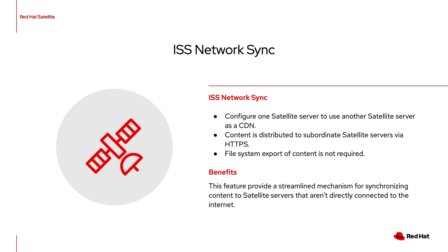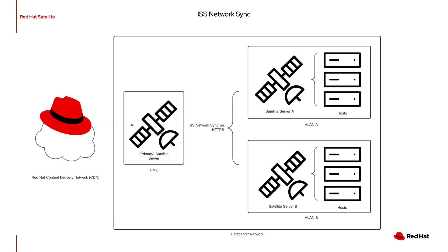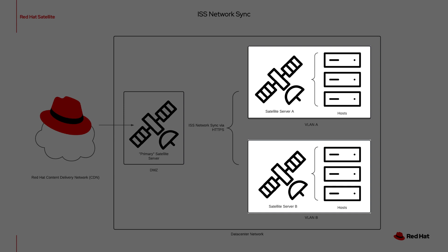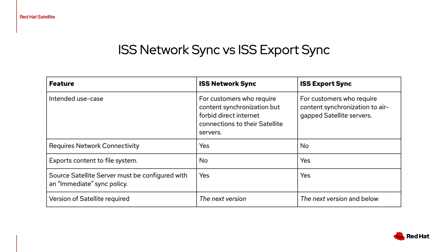The function of ISS network sync is pretty simple — you just configure your subordinate Satellite servers to use another Satellite as a content delivery network provider. Here's a diagram of how this works: data is synchronized directly to the primary Satellite server, and the secondary Satellite servers in VLAN A and B then synchronize their content from it. ISS was available in previous versions of Satellite, but ISS network sync still requires network connectivity. We now refer to the other ISS sync as ISS export sync, because content is exported to the file system before being transferred to a secondary Satellite server. Export sync would be used for situations where content must be physically transferred because the network is not fast enough, not reliable enough, or a physical air gap is required. Both network sync and export sync are available in Satellite 6.11.